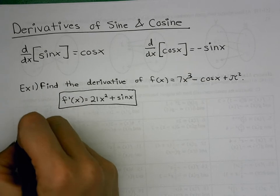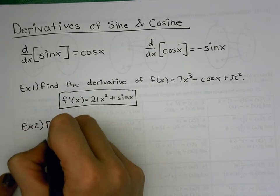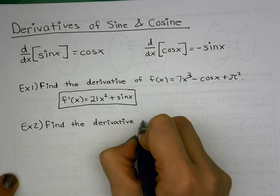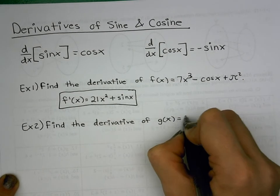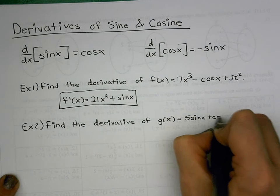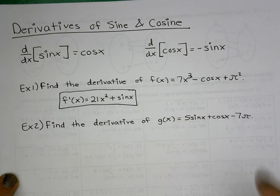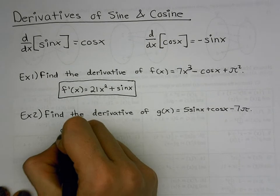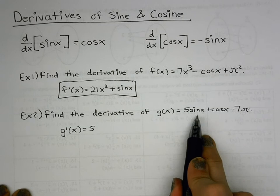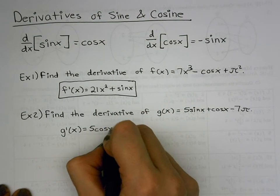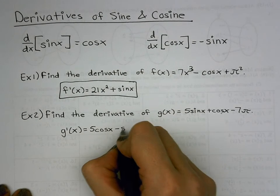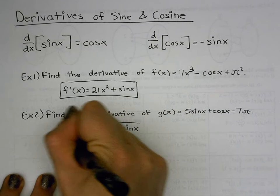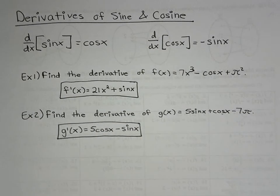Example two: find the derivative of g(x) = 5 sin(x) + cos(x) − 7π. g′(x): five is a coefficient, so it hangs out — derivative of sin(x) is cos(x), giving 5 cos(x); derivative of cos(x) is −sin(x); and 7π is a constant — some fixed value like 21-point-something — so its derivative is zero. Therefore g′(x) = 5 cos(x) − sin(x).